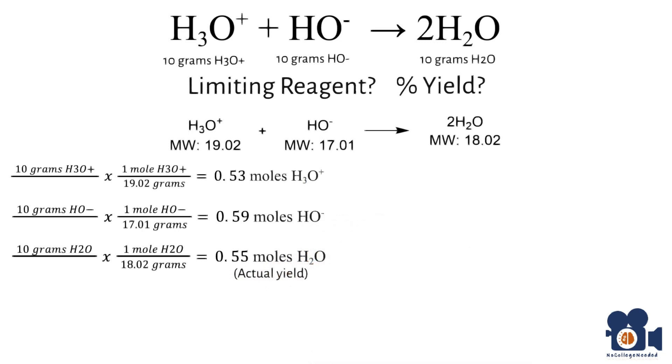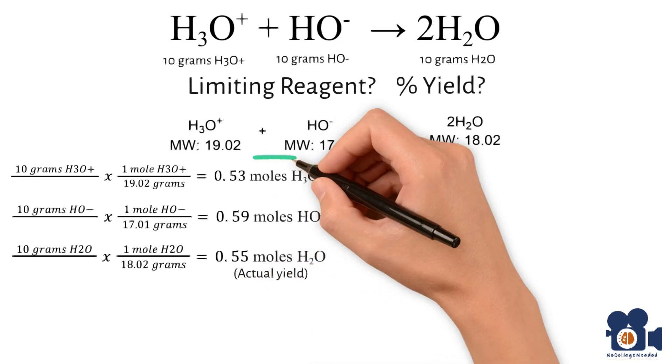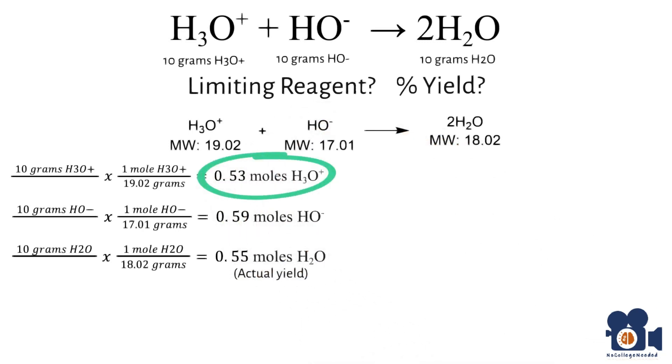Comparing the moles of starting material, you see that the limiting reagent is H₃O⁺ with 0.53 moles. This is a great example of why you must convert everything to moles because even though you started with the same weight in grams, you do not have the same number of molecules.